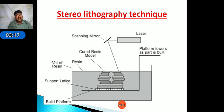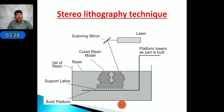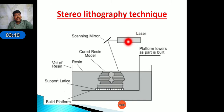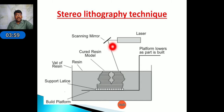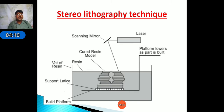The system consists mainly of: a laser source, a scanning mirror, a build platform, support lattice, wet resin, and the resin model. First, the laser is produced and transferred to the scanning mirror. The mirror rotates to a convenient angle and moves as per the pattern placed on the build platform, creating the model layer by layer.